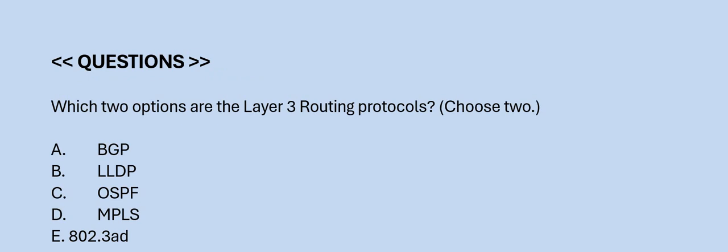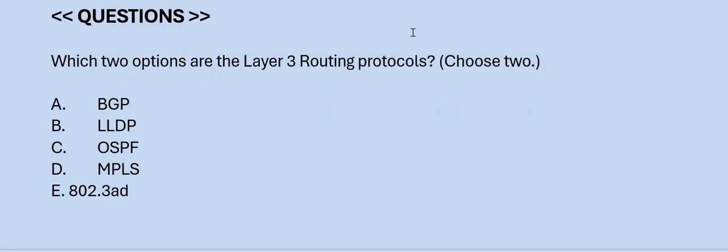Next question: Which two options are the layer 3 routing protocols? Choose two. Option A: BGP. Option B: LLDP. Option C: OSPF. Option D: MPLS. Option E: 802.3AD. The correct answers are Option A and C.